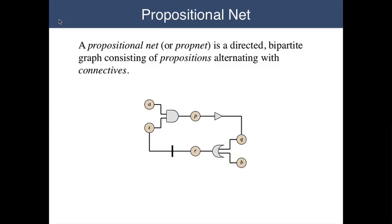In this case, there are six propositions, the round circles labeled A, B, P, Q, R, and S.